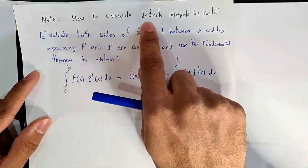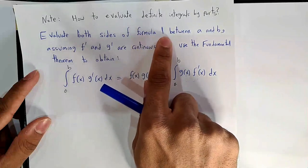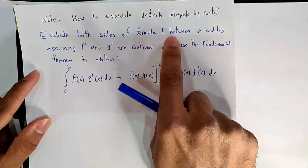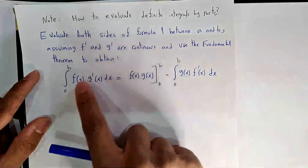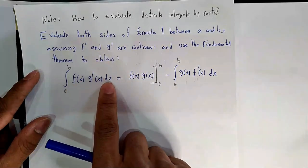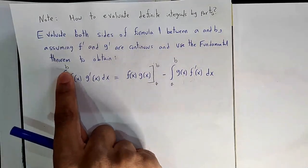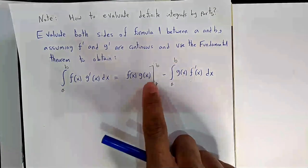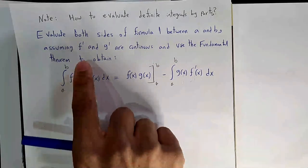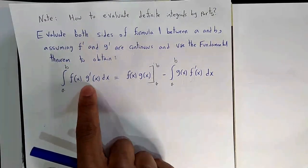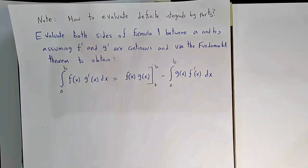For definite integrals by integration by parts: evaluate both sides of the formula from a to b, assuming f′ and g′ are continuous (needed so the integrands are continuous, as required by the fundamental theorem). The formula becomes: ∫ₐᵇ f·g′ dx = [f·g]ₐᵇ − ∫ₐᵇ g·f′ dx.